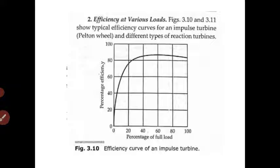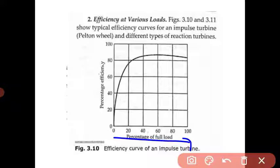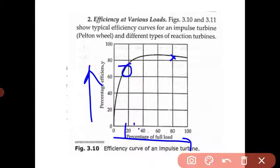The second characteristic is efficiency at various loads. The efficiency curve of any impulse turbine plots percentage of full load against percentage efficiency. At 80% load you get efficiency of more than 80%, whereas at 10 to 20% load you get less efficiency. The conclusion is that you must operate at full load to get good efficiency.